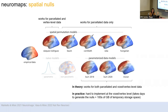The parametrized versions theoretically work for both parcellated and voxel or vertex level data, but I don't recommend using them for voxel-level data because it takes a really long time and a lot of memory — it would need to be done on a cluster. I believe in you if you want to try, but just a heads up.